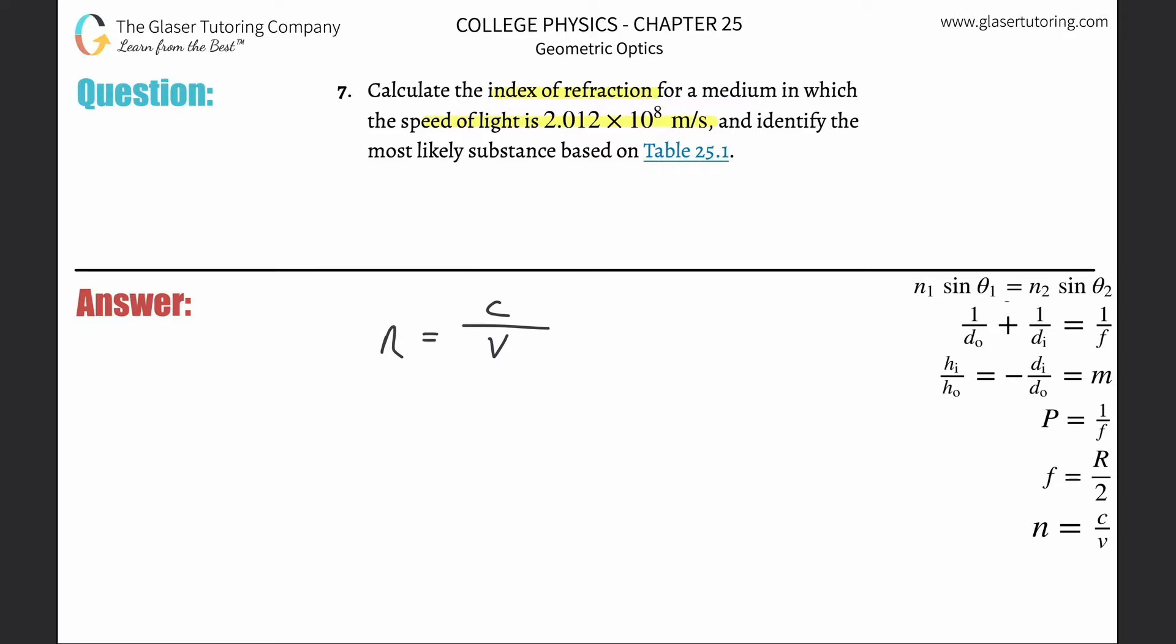So what we are tasked to do is we're trying to find the index of refraction. So we know these two things. Speed of light in a vacuum is about 3 times 10 to the 8. The speed of light here in this medium they told us is 2.012 times 10 to the 8.